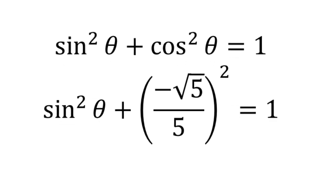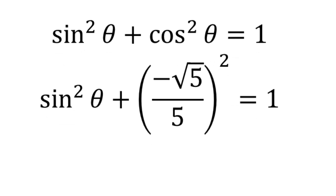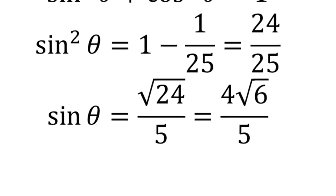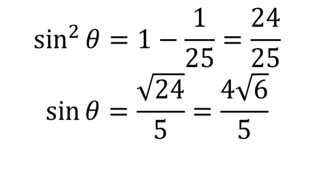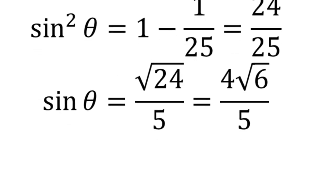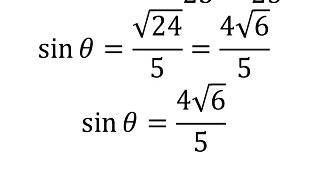Applying the Pythagorean identity again and solving for sinθ, we get sin²θ equals 24/25, and when we take the square root of both sides, we get sinθ equal to 4√6/5.